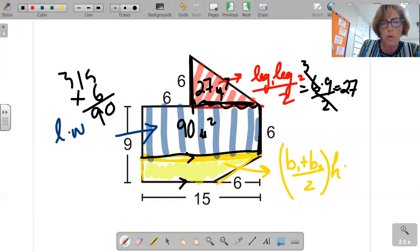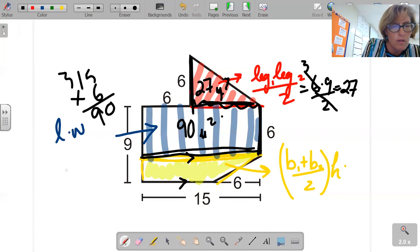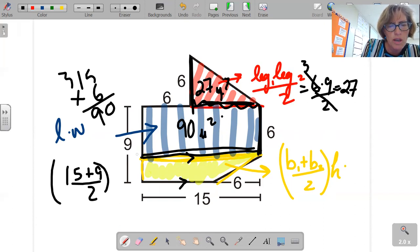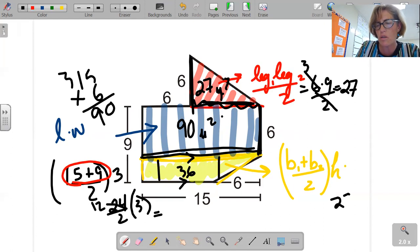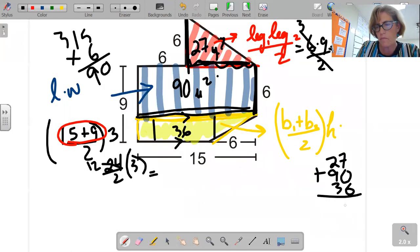This one, base is going to be 15, the other base is going to be nine, over two times our height, which is right there, is three. 15 plus nine, that's 24 over two times three, and it's 12 times three, which is 36. So if you simply add 27, 90, 36, it's 153 feet squared.